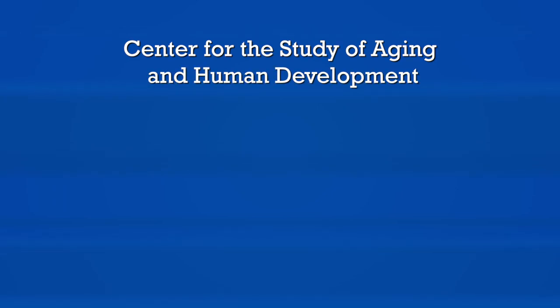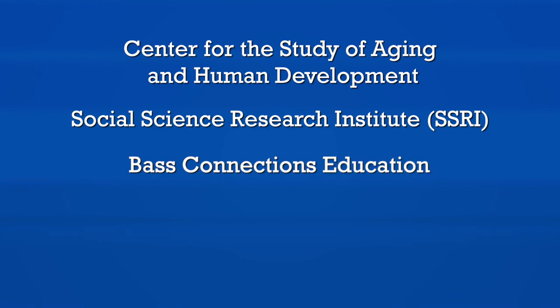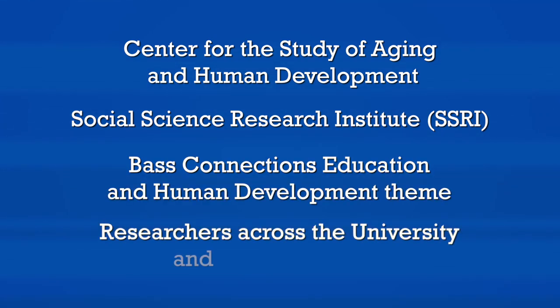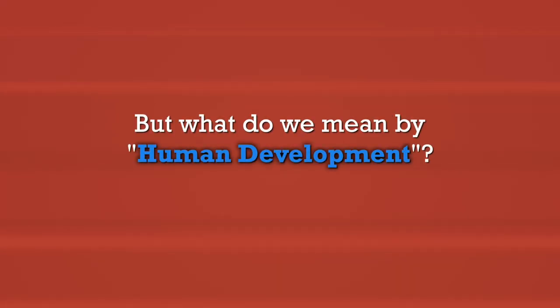At Duke we have several clusters on campus devoted to something called human development. There is the Center for the Study of Aging and Human Development, and here at SSRI where we're filming this video series, we have teams devoted to education and human development, including Bass Connections teams and scholars devoted to education and human development. As an undergraduate you can even get a certificate in human development. In this module we're going to discuss two major historical strands to help us understand how human development has made its way into both academia and public policy.